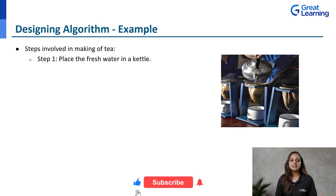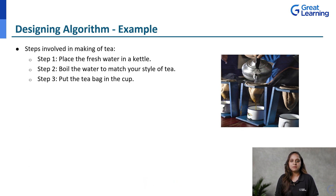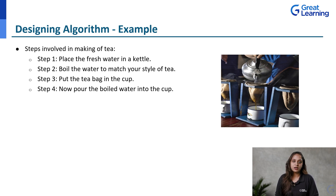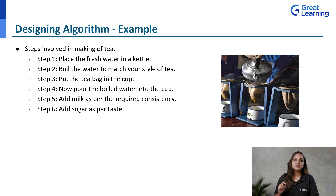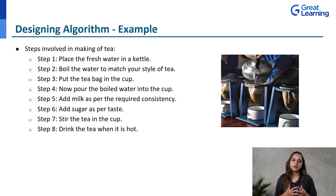For example, if we have to write an algorithm for making tea, the first step is to place fresh water in a kettle. The next step is to boil the water to match your style of tea. Then you will put the tea bag in the cup, pour the boiling water into your cup, add milk as per your required consistency, add sugar according to your taste, and stir the tea. Finally, the tea is ready to be served. This is the basic step-by-step process to make tea.